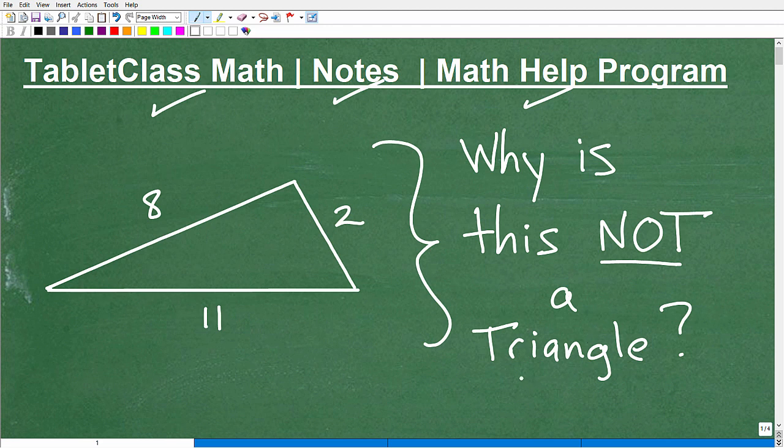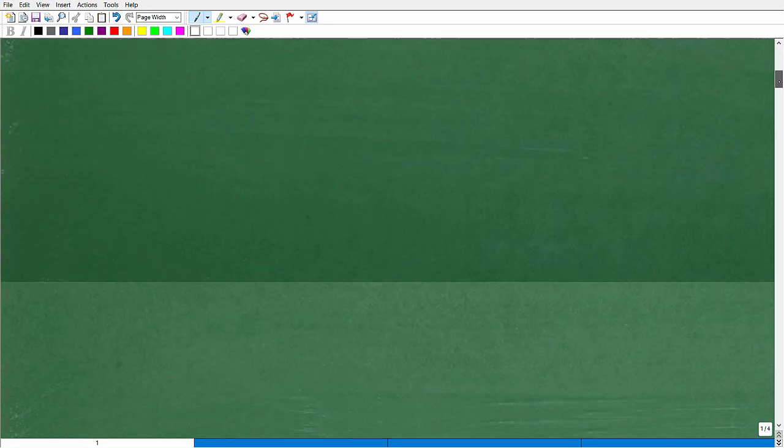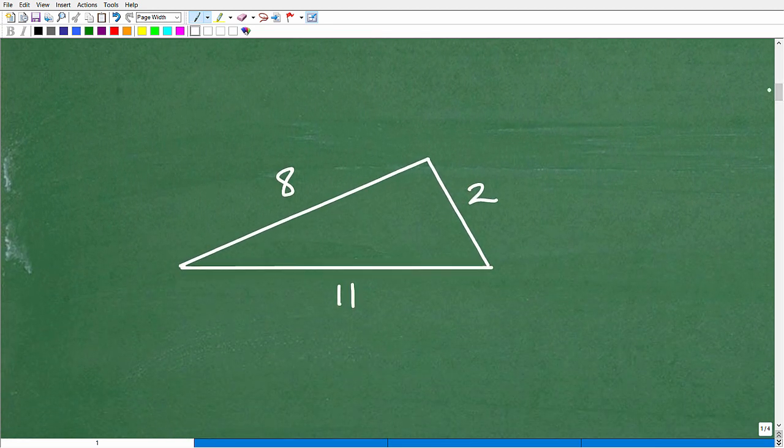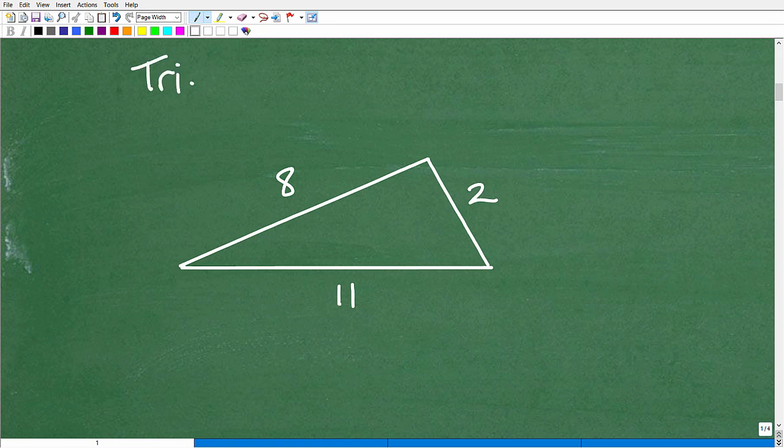So why is this not a triangle? Again, if you look at it, it's like, well, there is a triangle here, but it's the values. The values are not right. Okay. Now, what is not right with this triangle? Well, we're going to get to that right now. Okay. So what I'm going to be teaching you is something called, basically, it's called the triangle inequality.